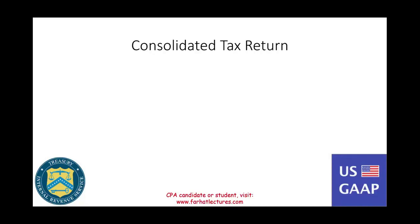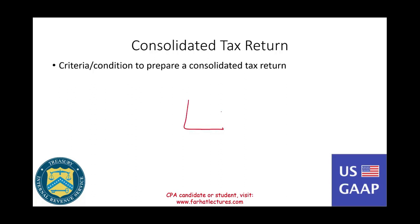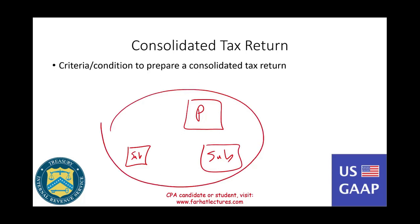Hello and welcome to this session in which we will discuss when do we have to prepare a consolidated tax return. Simply put, a consolidated tax return is a tax return where you have a parent company and several subsidiaries. All this group — parent, sub 1, sub 2, could be sub 3, many subsidiaries or affiliated groups — they file one tax return.